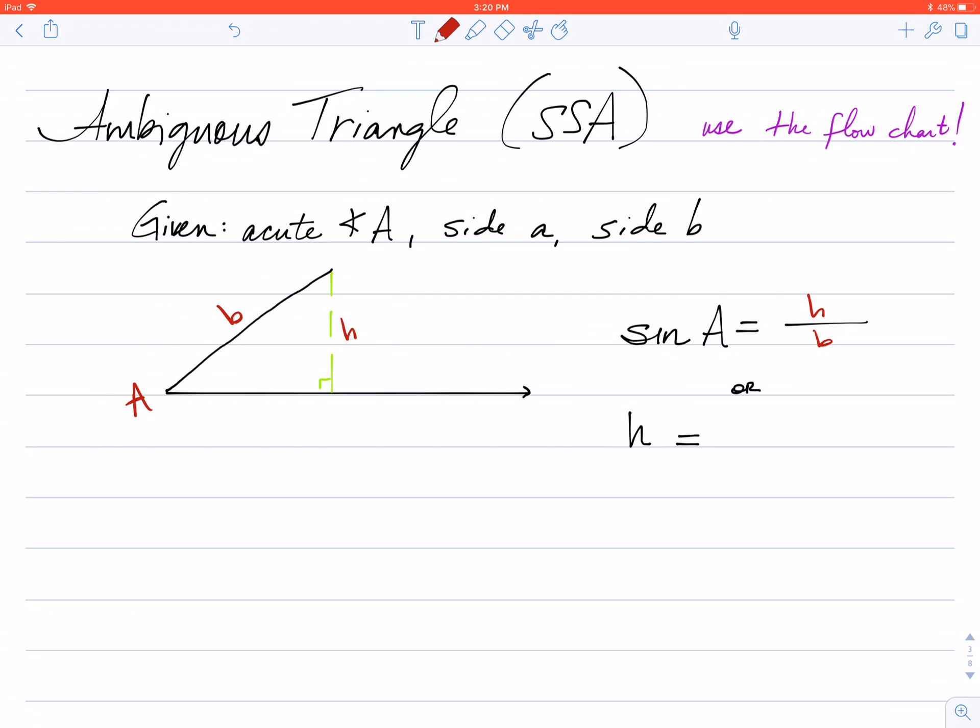If I asked you to get the h alone, to get h by itself, then you would just simply tell me, let's move the b to the other side by multiplying. And I would have b times the sine of angle A. Now, the reason I go through this is because in a few minutes, we're going to talk about the height. Every time we see height, I need to think b sin A. Every time I see height, I want to think b sin A. In fact, we're going to start writing b sin A as a substitute for the height of my triangle.